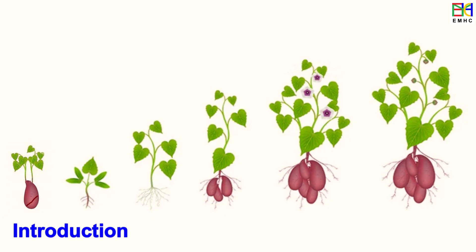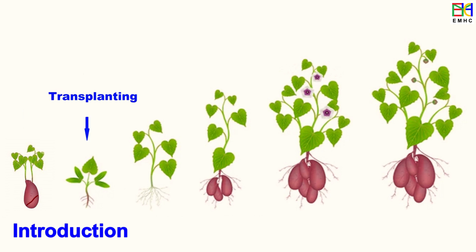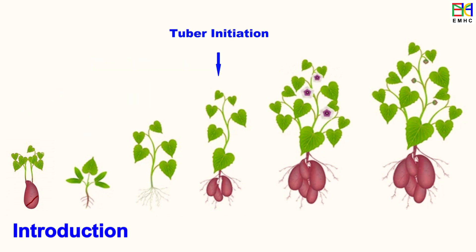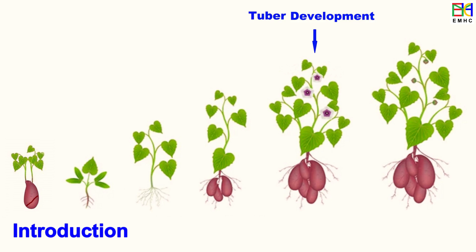The life cycle of sweet potatoes can be divided into several distinct growth stages: sprout development, transplanting, vegetative growth, tuber initiation, tuber development, and tuber maturation.